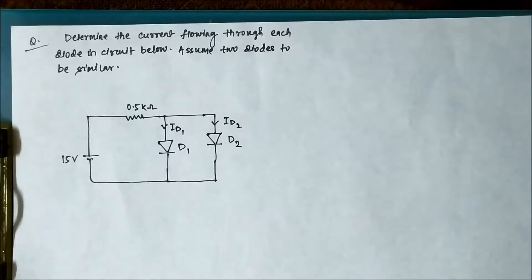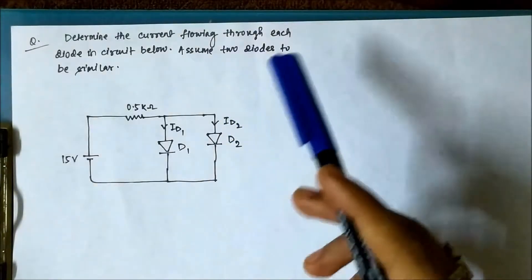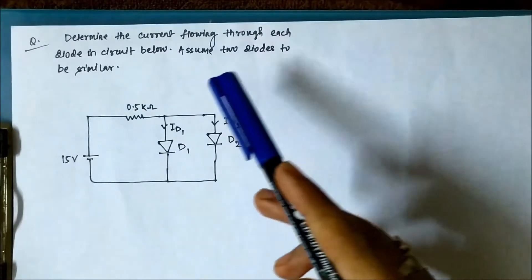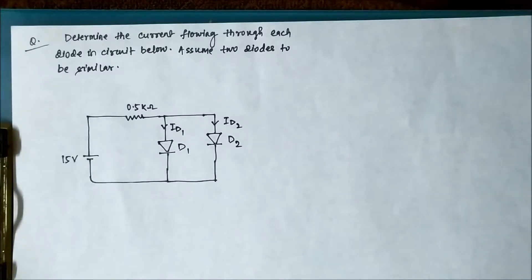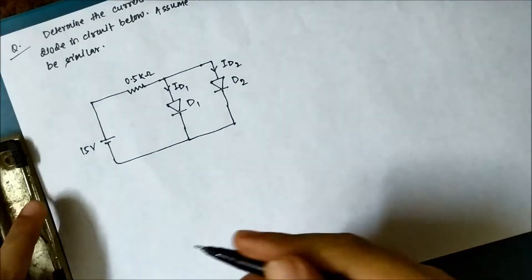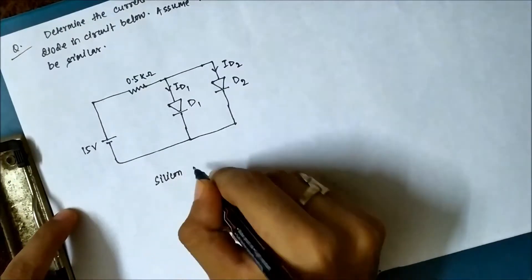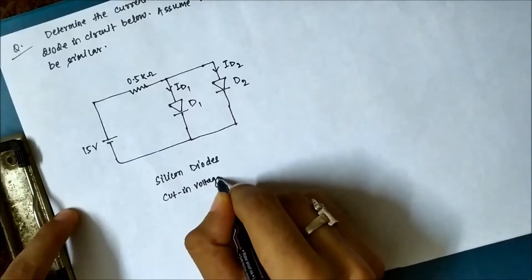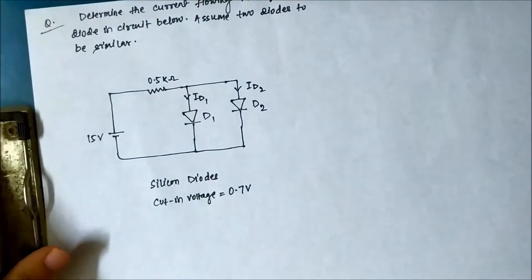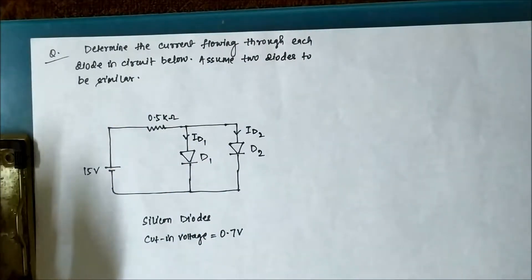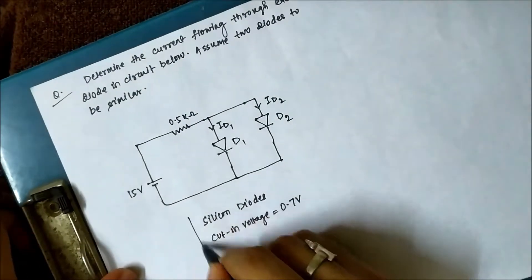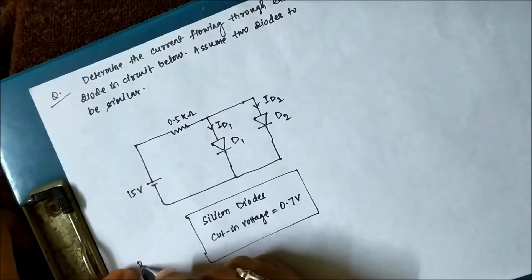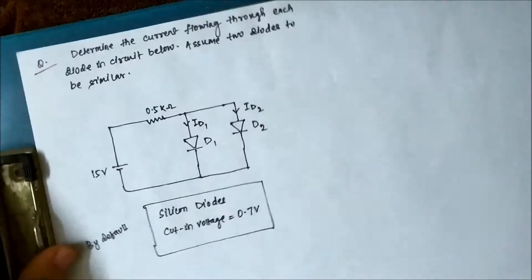As I've said in my previous videos, whenever you come across diodes in a numerical question, the first thing to pay attention to is whether the type of diode or the cut-in voltage has been given. Here there has been no mention of it, so by default we have to assume that the two diodes are silicon diodes with a cut-in voltage of 0.7 volt. This is the default condition when no diode type or cut-in voltage is specified.